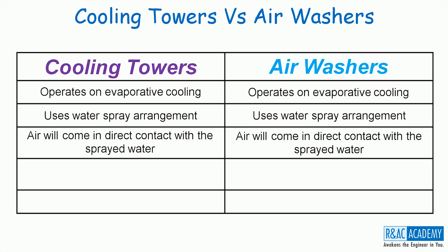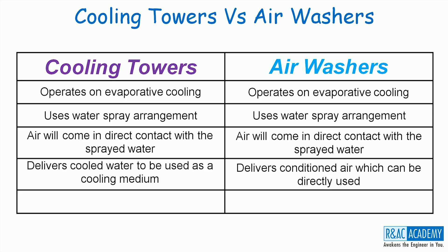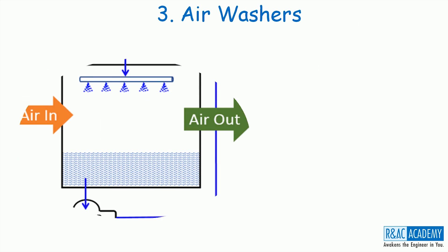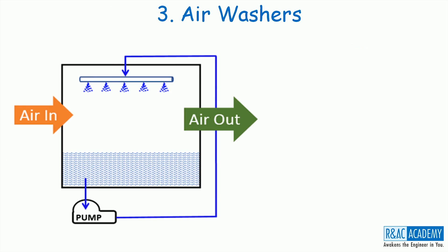Then where exactly do these two differ from each other? The cooling tower delivers cooled air to be used as a cooling medium, while the air washer delivers the conditioned air which can be directly used in air conditioning systems. Also, the cooling towers are placed outdoors or on terraces. On the other hand, the air washers are placed indoors in order to avoid contamination of conditioned air with dust, dirt, etc. The air washer has a spray arm to spray water from the top. Air will enter from one side, interacts with the sprayed water and then exits.